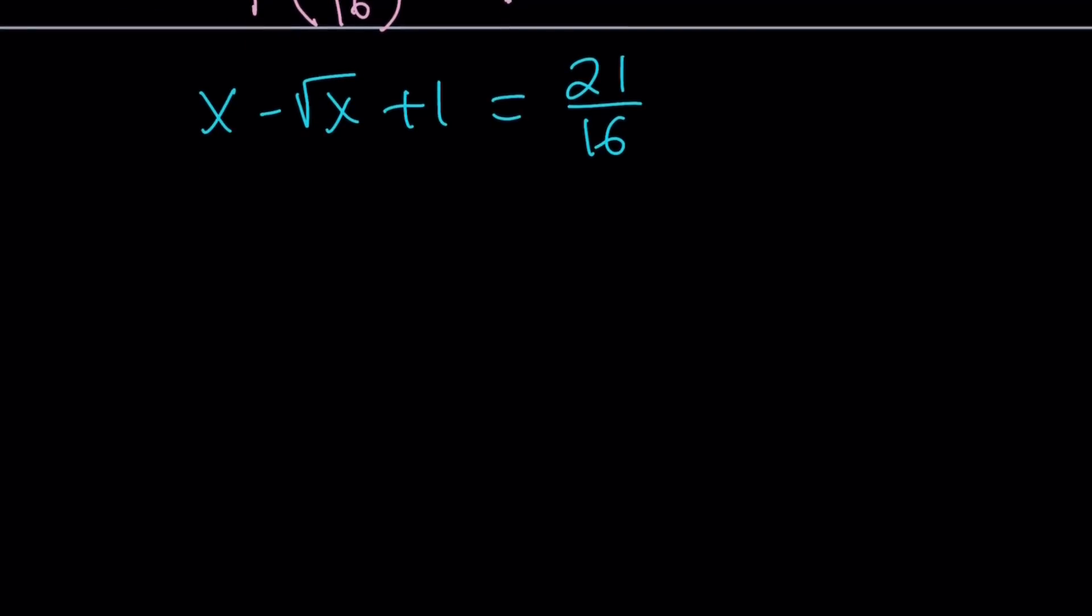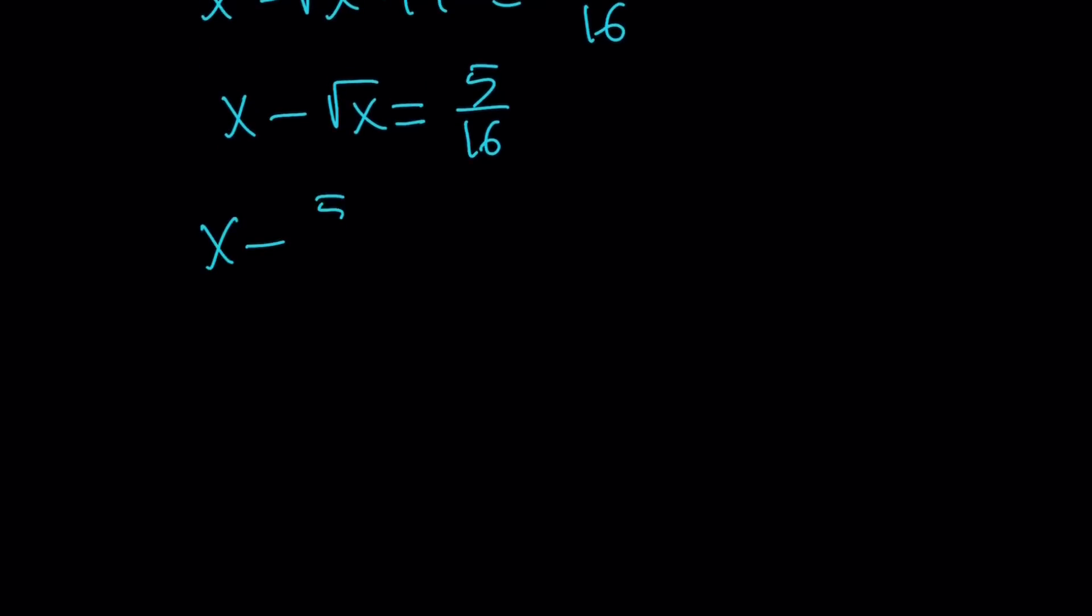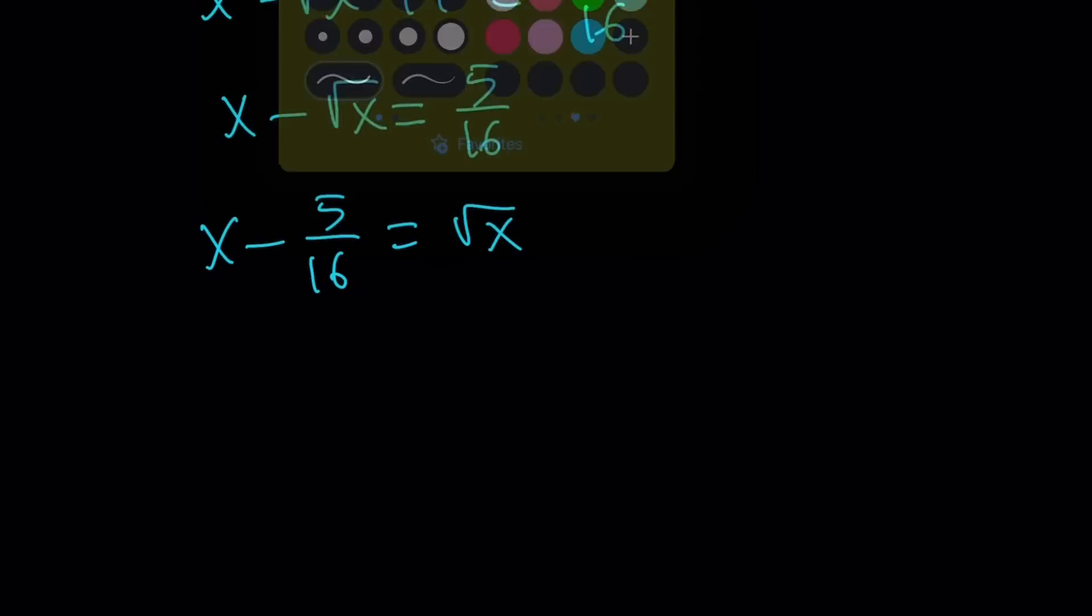But this is a radical equation. So how do I solve it? Subtract 1, it's going to be 5 over 16. So this is a radical equation. There's a couple different ways to go about it. For example, you can isolate square root of x and square both sides. Let's go ahead and do it.